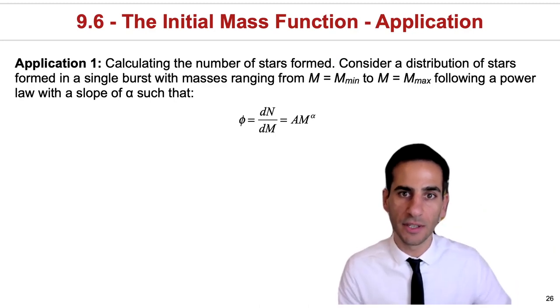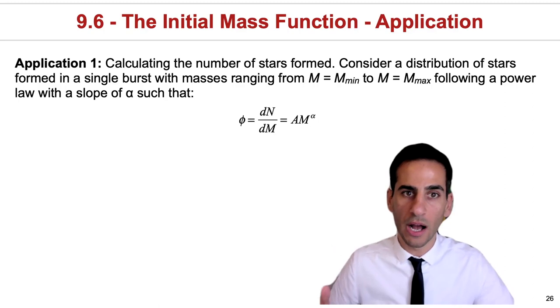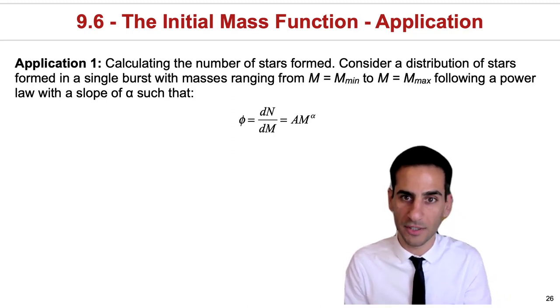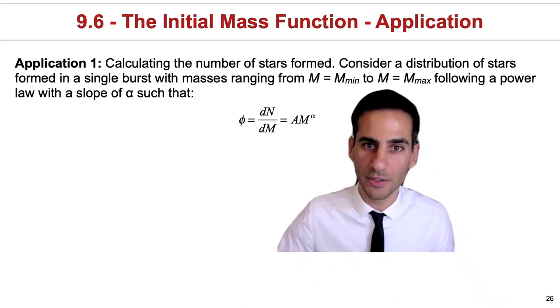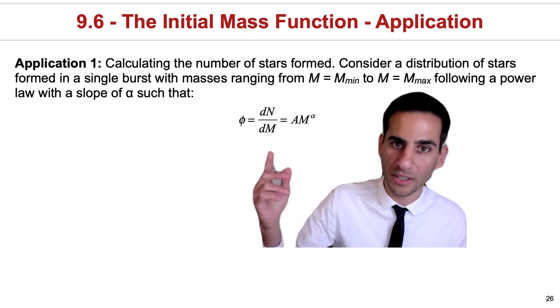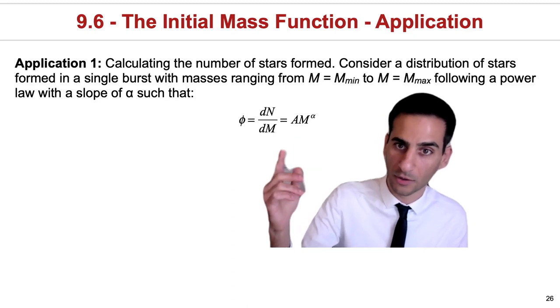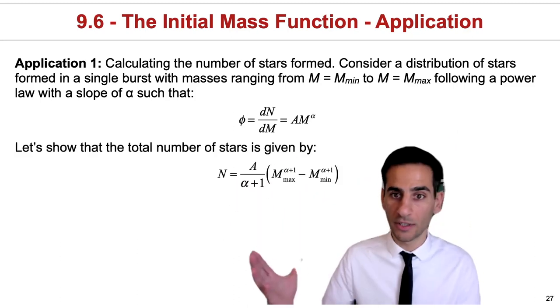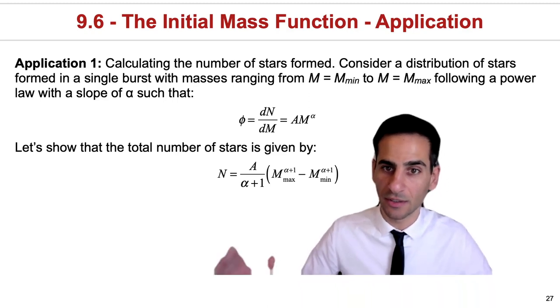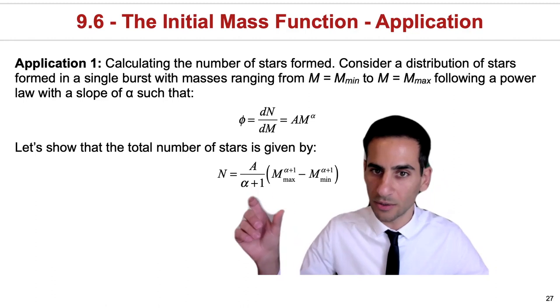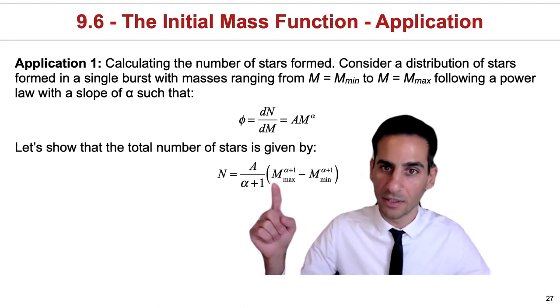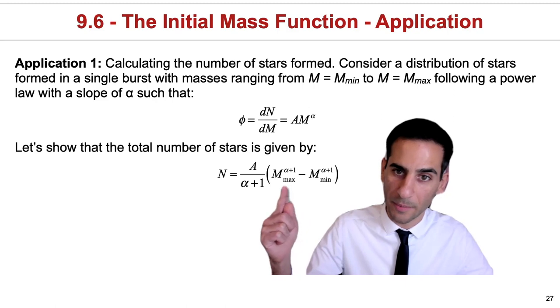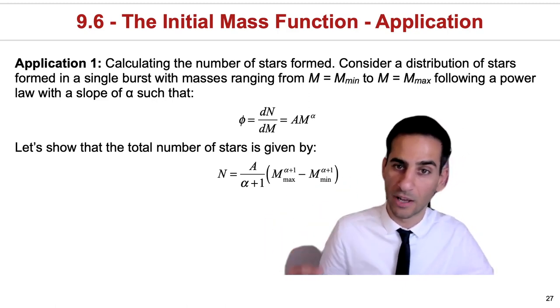You can find all the details in the lecture notes, but I think it's useful to guide you through how you would use the initial mass function to calculate the total number of stars that have been formed. Typically we use this simple power law, dN/dM = A × M^α. This power law tells you about the relative number of stars per unit mass. One thing we can easily show is that the total number of stars will be given by the constant divided by α+1, times the difference between the maximum mass and minimum mass with an exponent of α+1.